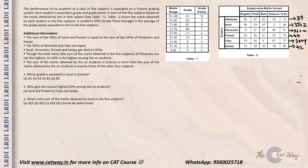Additional information is given: the sum of GP of Saral and Puneet equals the sum of GPA of Himanshu and Sanjay. Also, the GPA of Abhishek and Vijay are equal. Saral, Himanshu, Puneet, and Sanjay get distinct GPAs. Furthermore, though the total marks of Himanshu are not the highest, his GPA is the highest among all students. Finally, the sum of marks in science is more than the sum in exactly three of the other four subjects.